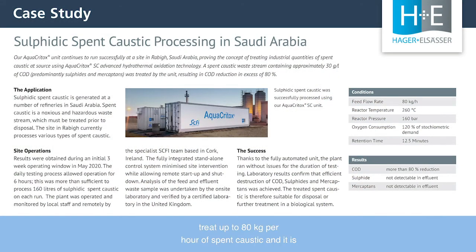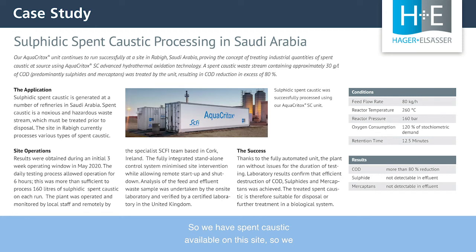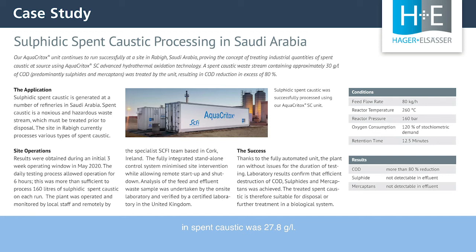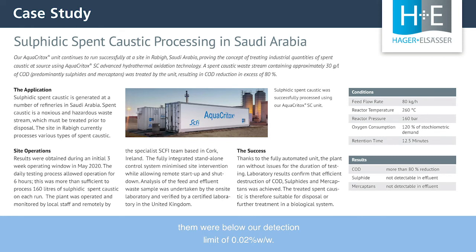Do you have any large-scale system in place? Yes, we have a demonstration unit that can treat up to 80 kilograms per hour of spent caustic. It is a containerized unit, easy to transport — we were able to set it up at a client site where spent caustic is available, treating it directly on-site in a continuous test run. Our first test run treated spent caustic with a COD concentration of 27.8 grams per liter. We achieved a COD reduction of around 80%, and both sulfide and mercaptan sulfur were below our detection limit of 0.02 mass percent — so they were destroyed efficiently.